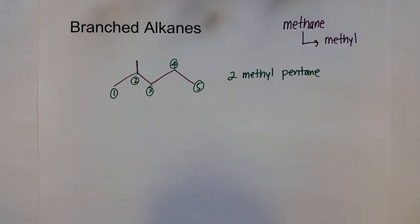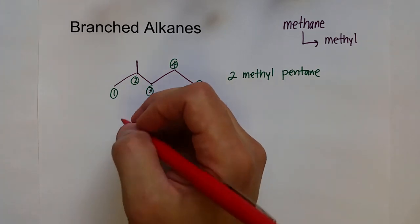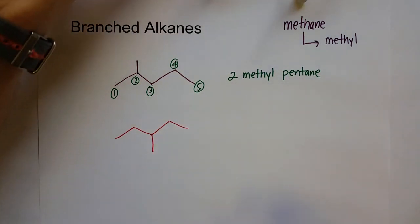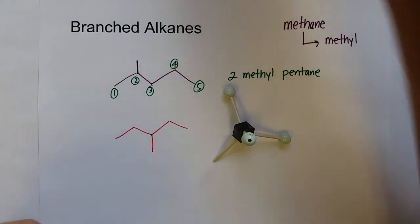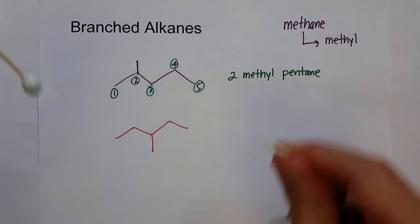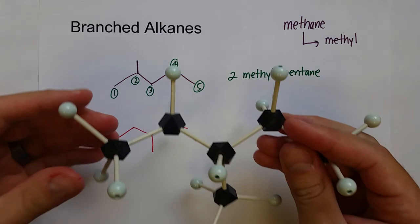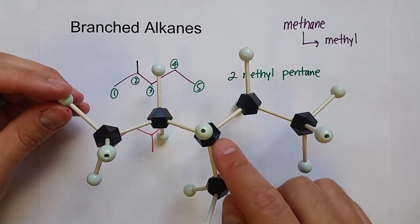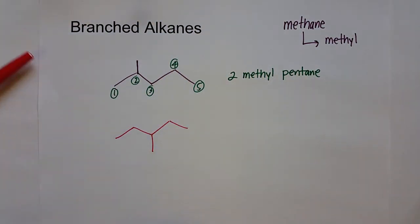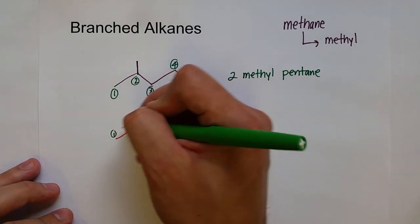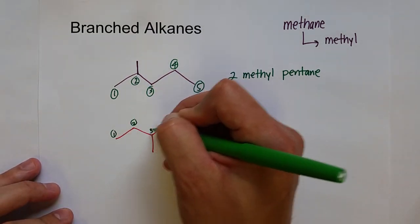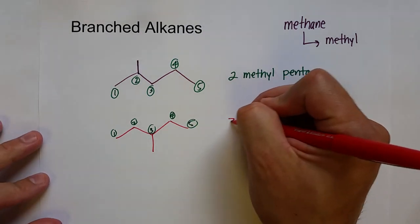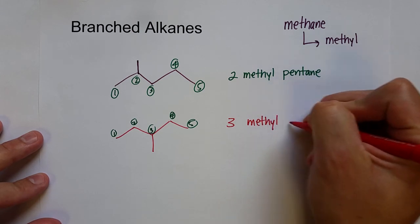That way we can distinguish it from this molecule, where instead of the methyl group on the second carbon, maybe it's on the third. So we move it — take this molecule off and put it down here instead. Before, the methyl was on the second carbon; now it's in the middle. So we number one, two, three, four, five — and now it is 3-methylpentane.